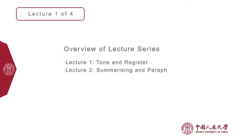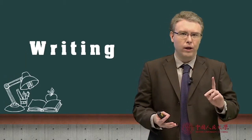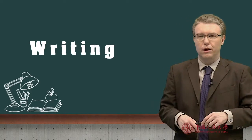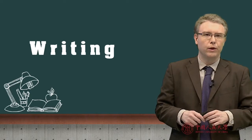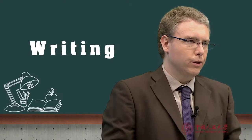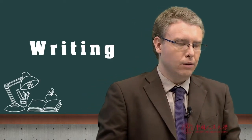This is the fourth in the series of five. We've looked at tone and register, we've looked at summarizing and paraphrasing, and in the last lecture we looked at writing a formal report — the basic structure and the questions you need to think about. In this lecture we're going to be looking at writing for business purposes with very generic guidelines, as I can't cater for every specific email you'll be writing. There'll be a short homework task at the end.